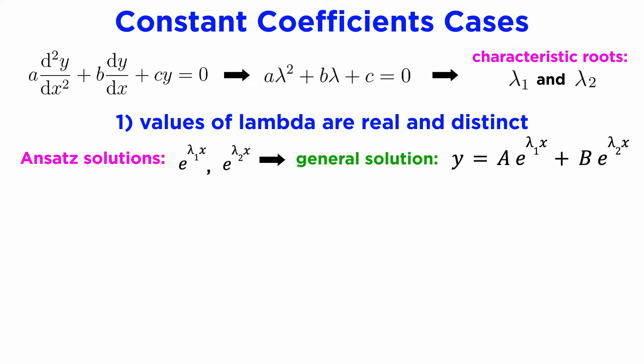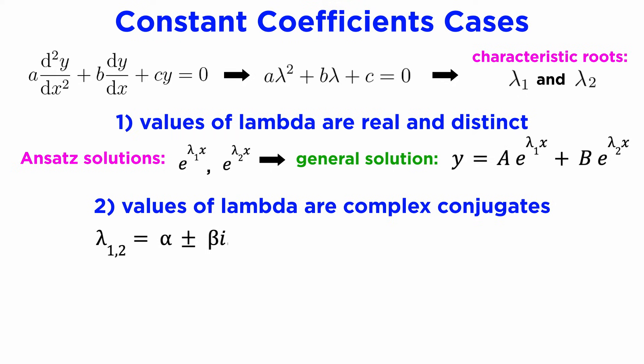The second case is if our roots lambda 1 and lambda 2 are not real, but instead complex numbers. In this case, since the coefficients of our DE are real, the complex roots lambda 1 and lambda 2 must be complex conjugates of each other. So we can write them as lambda 1 equals alpha plus beta i and lambda 2 equals alpha minus beta i, where alpha and beta are the real and imaginary parts of lambda, respectively.